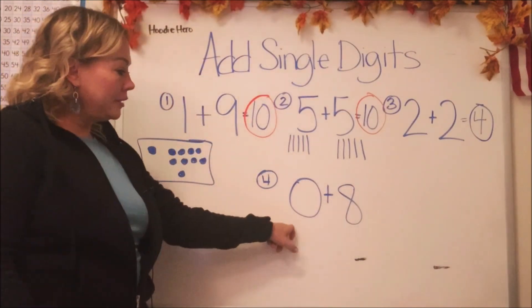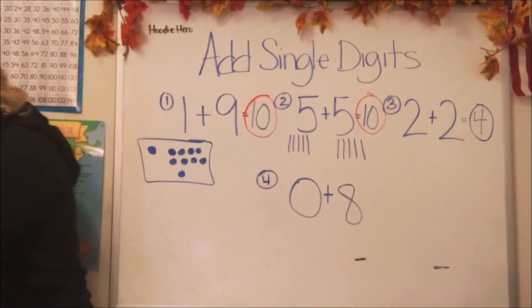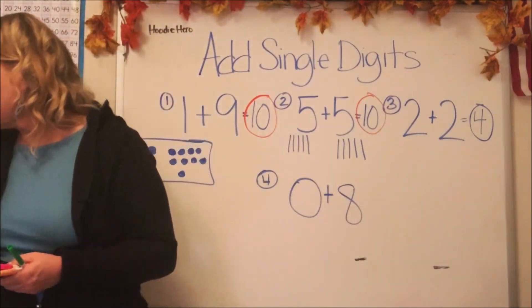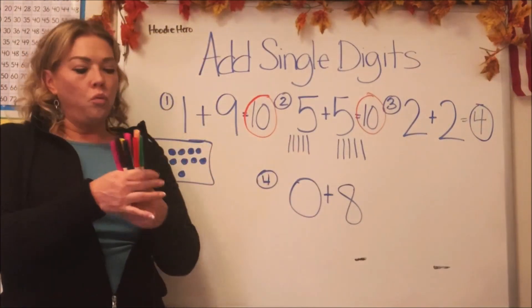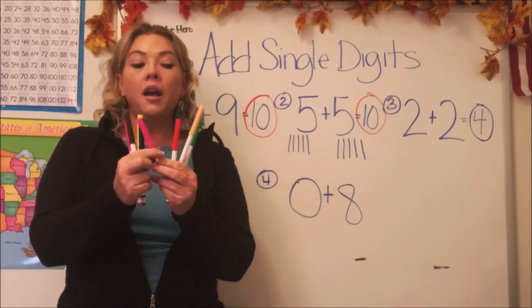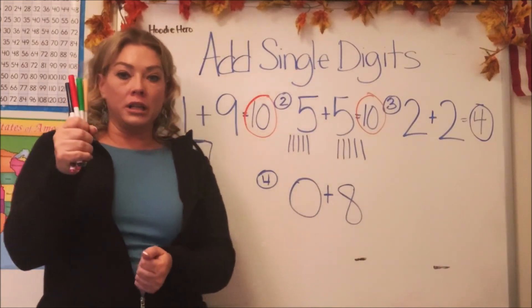Okay, last one, guys. Zero plus eight. For this one, I'm going to use some markers. Okay, let's count out eight markers. One, two, three, four, five, six, seven, eight. We have eight markers.